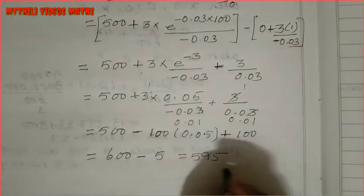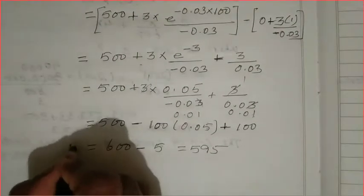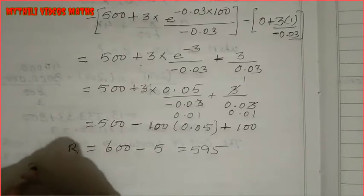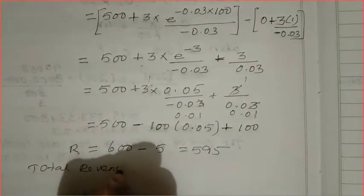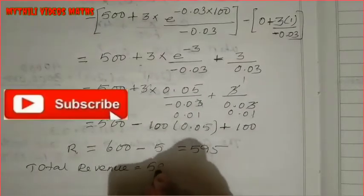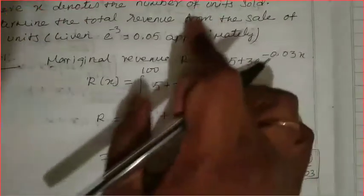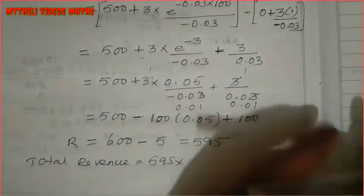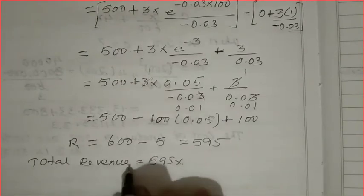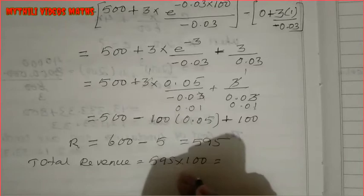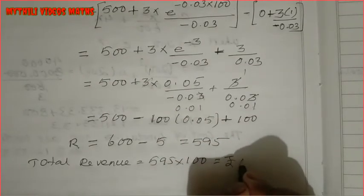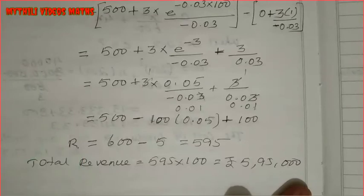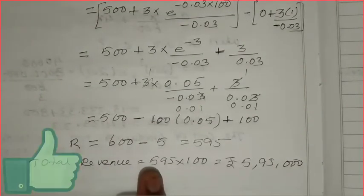That is 595. So this is the total revenue. Total revenue R equals 595. Total revenue is 595 thousands of rupees. This is the total revenue. Thank you.